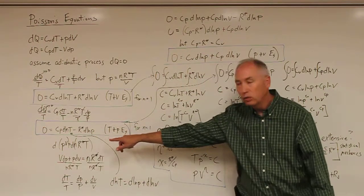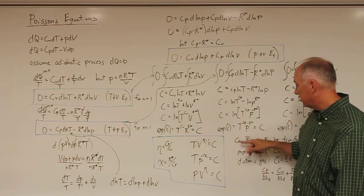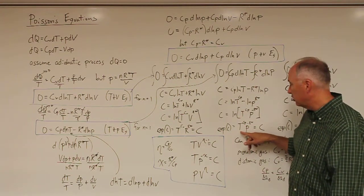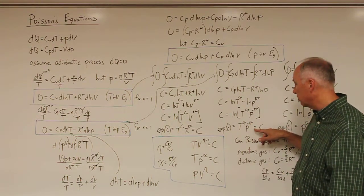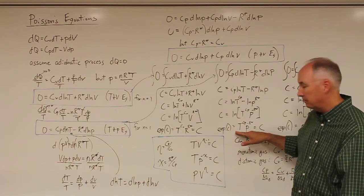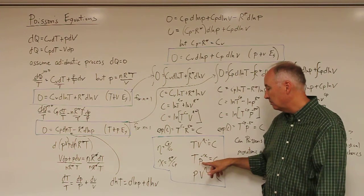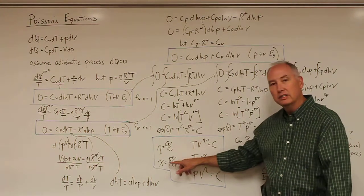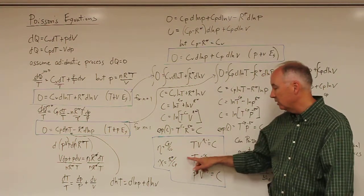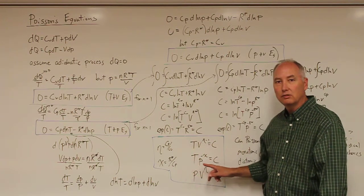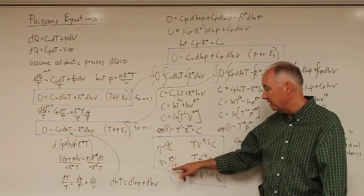Using the T and P equation and doing the same derivation, you end up with temperature to the c_p power times pressure to the minus R* equals a constant. With algebraic manipulation, you get the T-P relationship: temperature times pressure to the minus chi, where chi equals R* over c_p, equals a constant. This is very similar, of course, to the potential temperature equation where we had R_d over c_p.